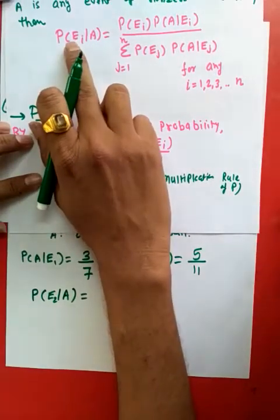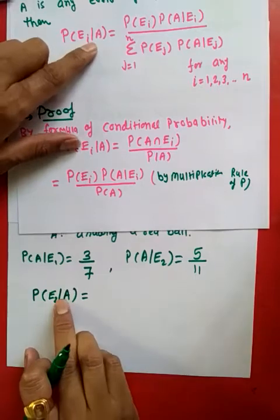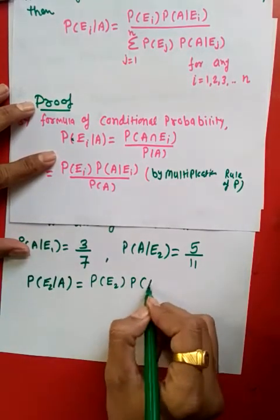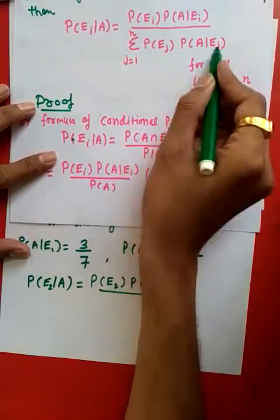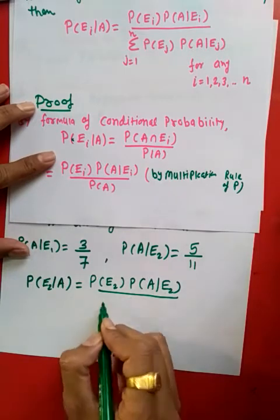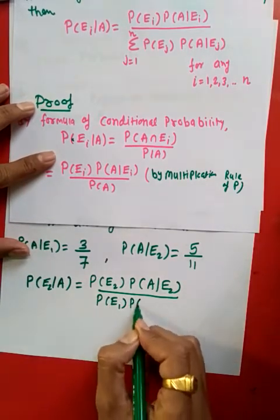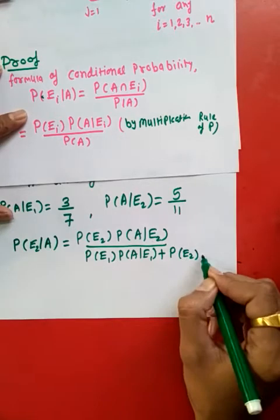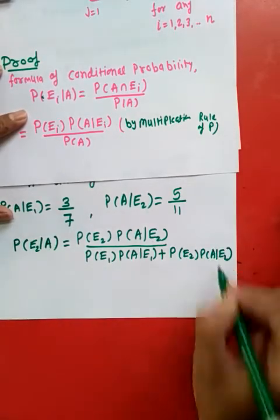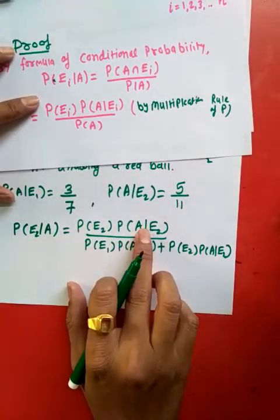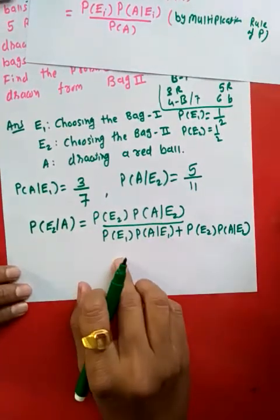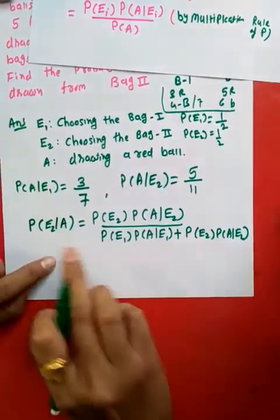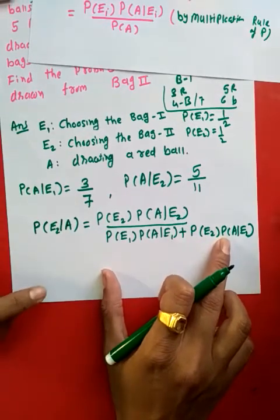Applying Bayes' theorem: P(E2 | A) = P(E2) · P(A | E2) divided by [P(E1) · P(A | E1) + P(E2) · P(A | E2)]. Now substitute the values we have calculated and you will get the answer. Bayes' theorem is very simple — you just need to remember one equation, apply it, and you get the answer.